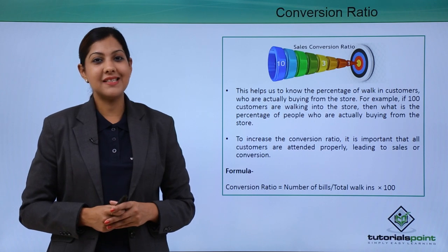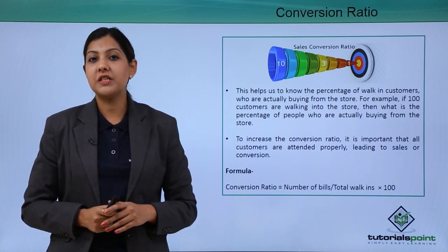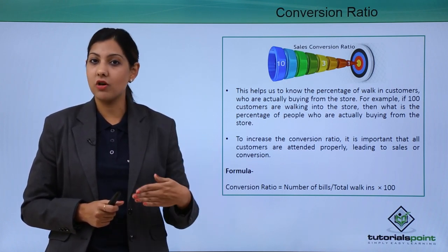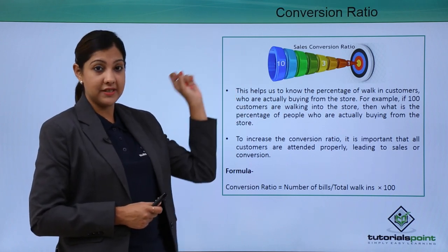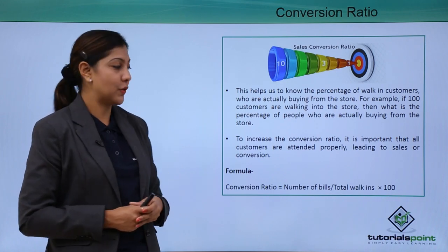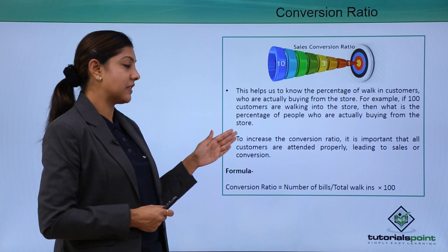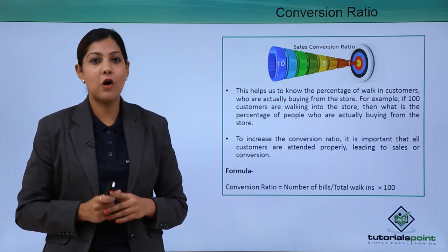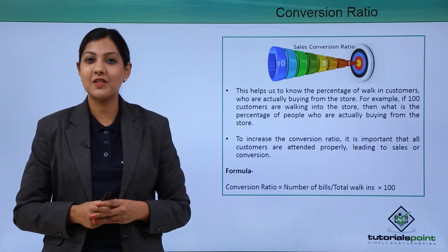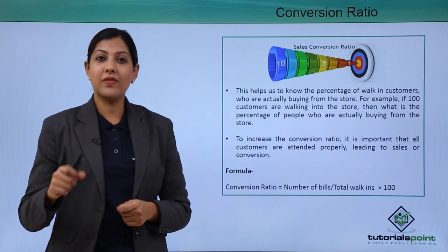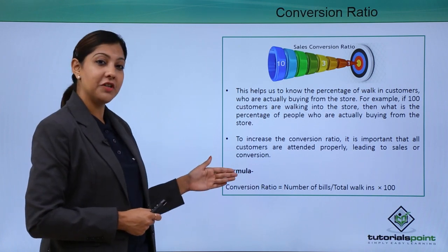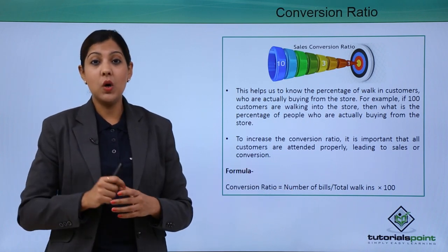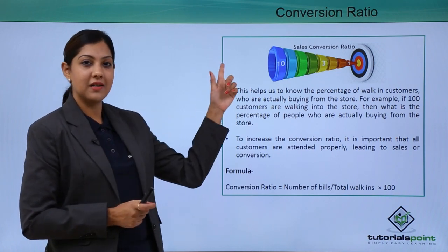In many retail outlets there is a security person at the entry of the store who punches in every time a customer walks in, helping you understand how many conversions have taken place. To increase the conversion ratio, it is important that all customers are attended to and led to sales. The formula is: Conversion Rate = (Number of Bills ÷ Total Walk-ins) × 100.